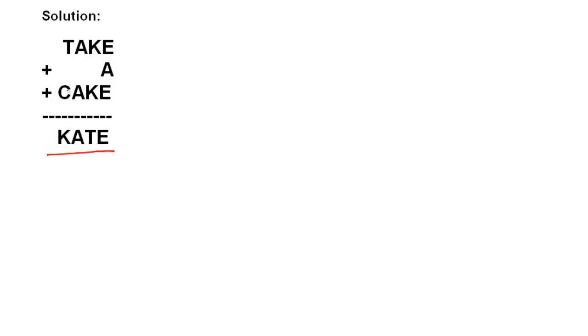Now let's take one more question: TAKE + A + CAKE = KET. First, rewrite it clearly: TAKE + A + CAKE = KET. This is an addition problem where we're adding a four-digit number, a one-digit number, and another four-digit number, getting a four-digit number. There is no extra digit in the result, so the leftmost carry trick doesn't directly apply here.